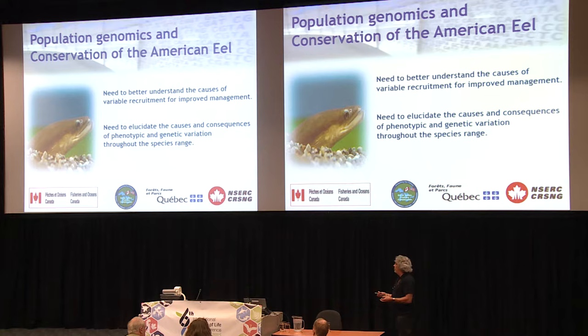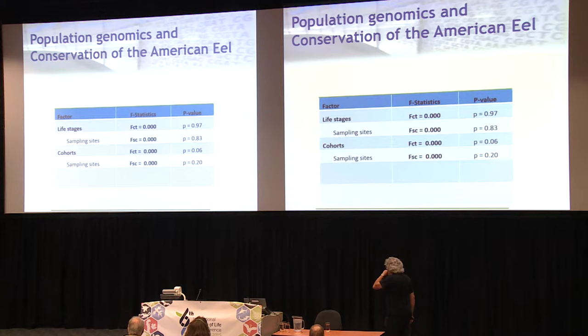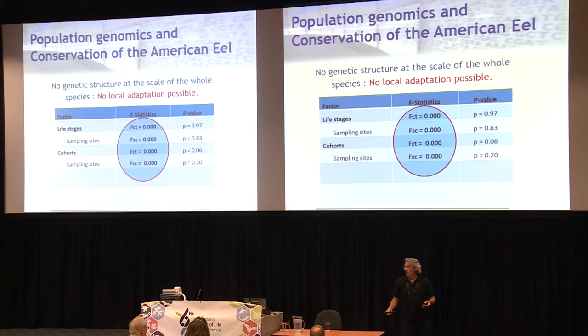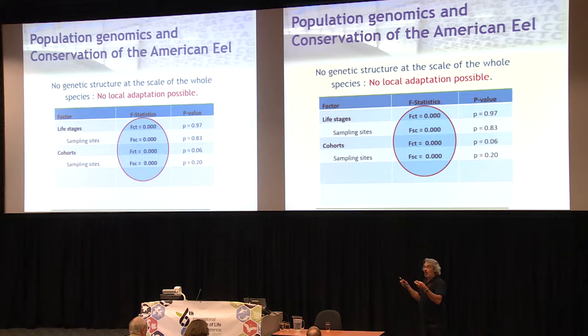The first step was to rigorously revisit the population structure in American eel. Of course it's the classic case of panmixia, but the real data was not there, so we redid the whole thing. And basically we got a beautiful negative result — just FST of zero, no genetic differentiation, whatever way you look at it. So clearly, there's no local adaptation possible in this species because all eels belong to one single gene pool.